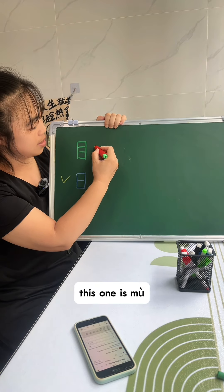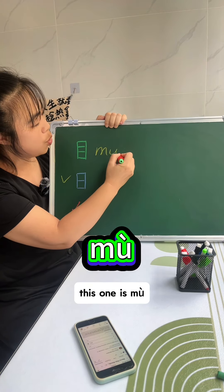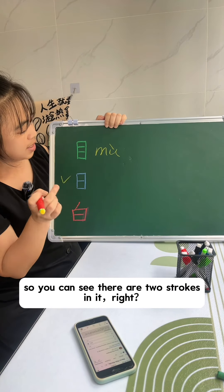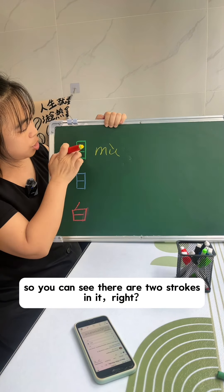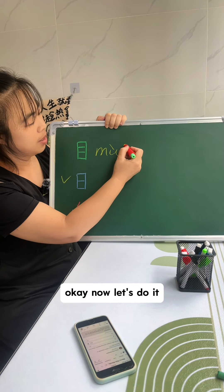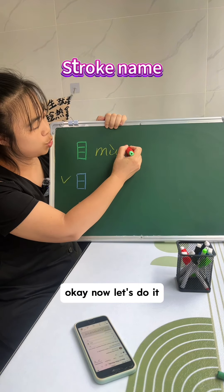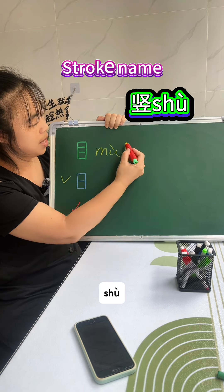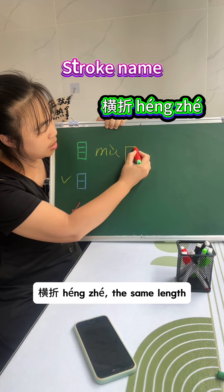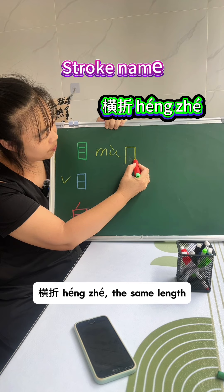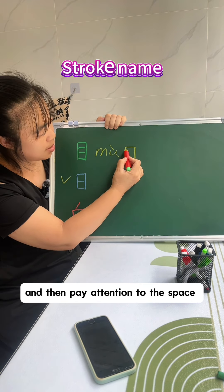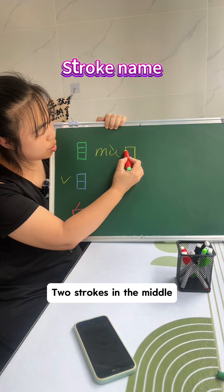This one is 目. 目 means eyes. You can see there are two strokes in it. Now let's do it. And then touch it, touch the top — the same length. And then pay attention to the space. Two strokes in the middle.